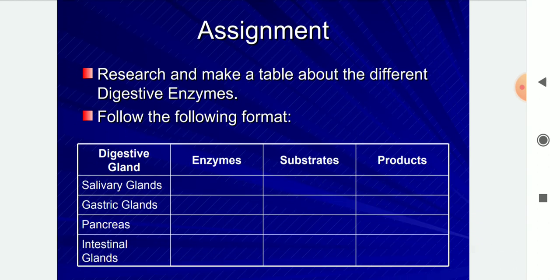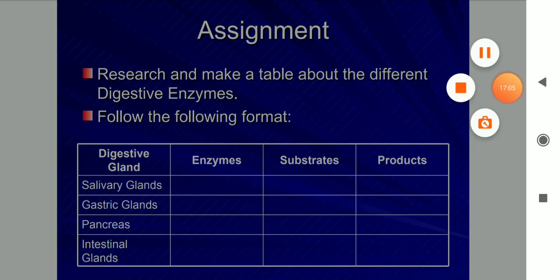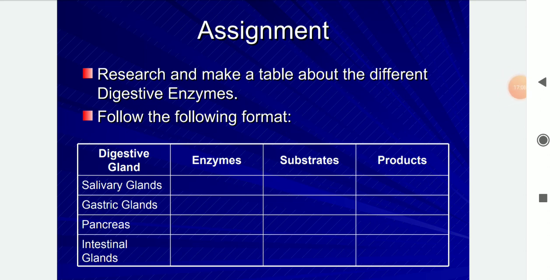For your assignment, research and make a table about the different digestive glands — salivary glands, gastric glands, pancreas, and intestinal glands — listing the enzymes, substrates, and products for each. After completing your assignment, send it to the email: ptyavle@kkvaak.edu.in. Thank you for listening to this video.